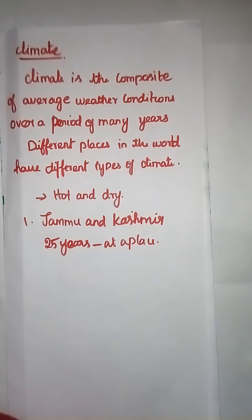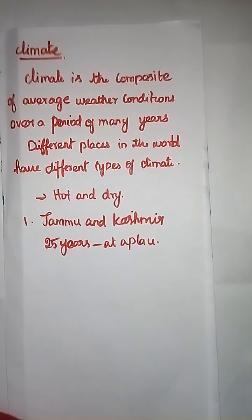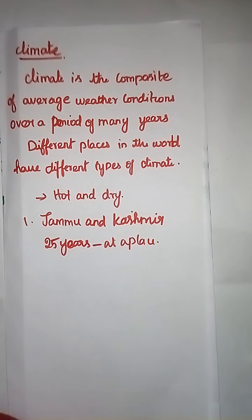As two examples, the first is Jammu and Kashmir and the second is Thiruvananthapuram in Kerala. In Kerala the temperature is very high, but in Jammu and Kashmir it is lower. To summarize: hot and dry, wet, and insulated are different climate types.